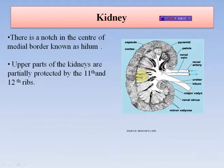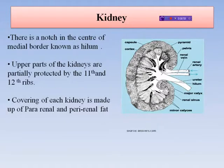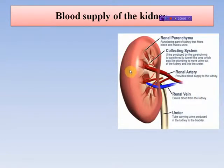The upper parts of the kidneys are partially protected by the 11th and 12th ribs. The covering of each kidney is made up of pararenal and perirenal fat. Each whole kidney and adrenal gland are surrounded by two layers of fat. Pararenal fat is located external to the renal fascia, which is a layer of connective tissue encapsulating the kidneys. Perirenal fat is located within the renal fascia and also within the renal sinus.